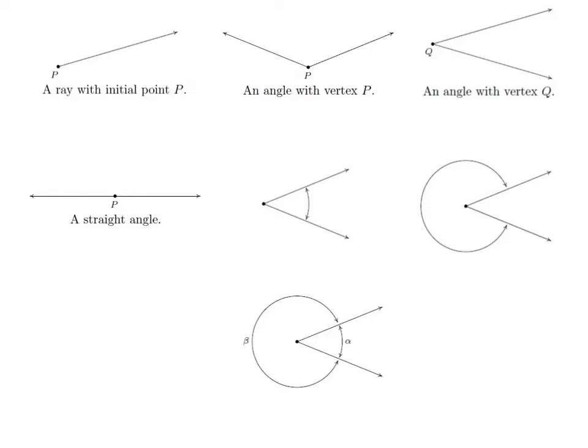The way angles are measured are with Greek letters. So here we see alpha is the measurement of the acute angle, and beta is the measurement of the obtuse angle.